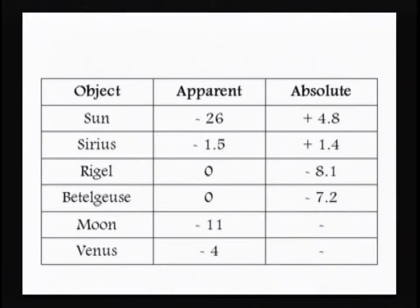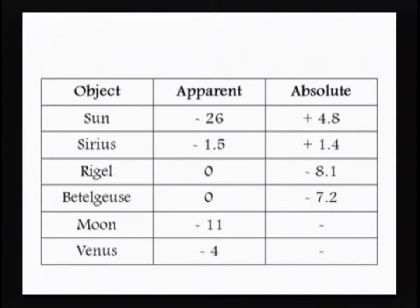Sirius, one of the brighter stars in our sky, has an apparent magnitude of about -1.5 and an absolute of positive 1.4 — very close values. Rigel has an apparent brightness of about 0, but an absolute magnitude of negative 8.1, showing it's genuinely very bright and far away. The moon is extremely bright at negative 11, and Venus at negative 4. For the moon and Venus, we're just looking at apparent magnitude.